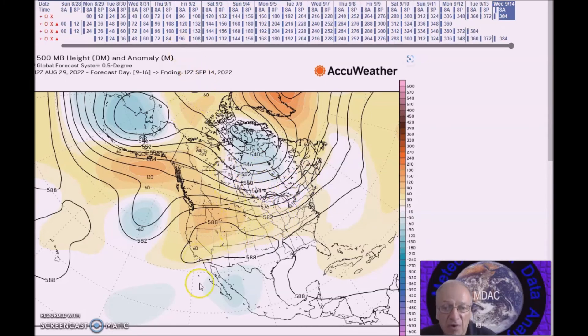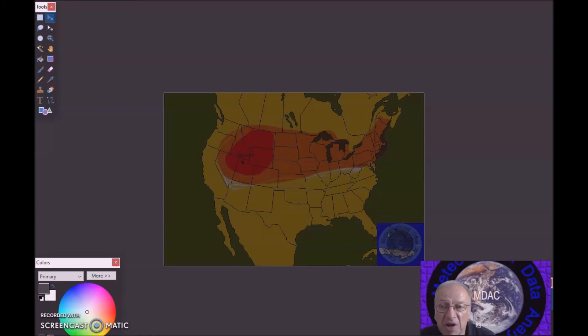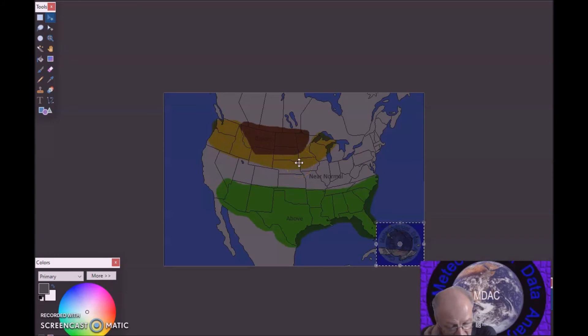For now I'm calling for little change in the temperature anomalies for this period. For precipitation, calling for below normal precipitation here, probability of occurrence 35 to 40 percent, above normal precipitation forecast here, probability of occurrence is near 40 percent.